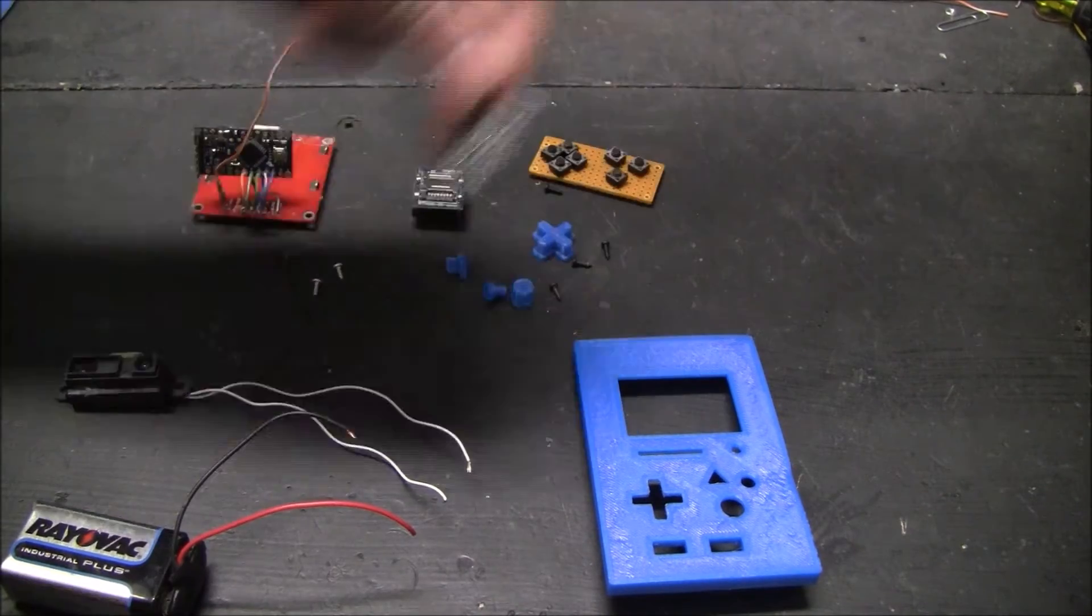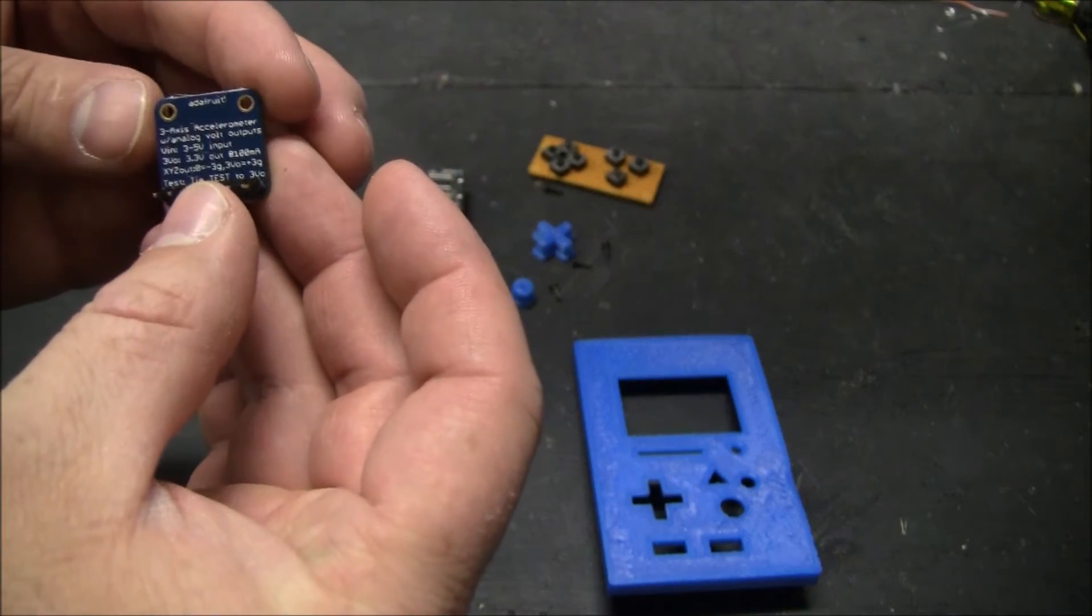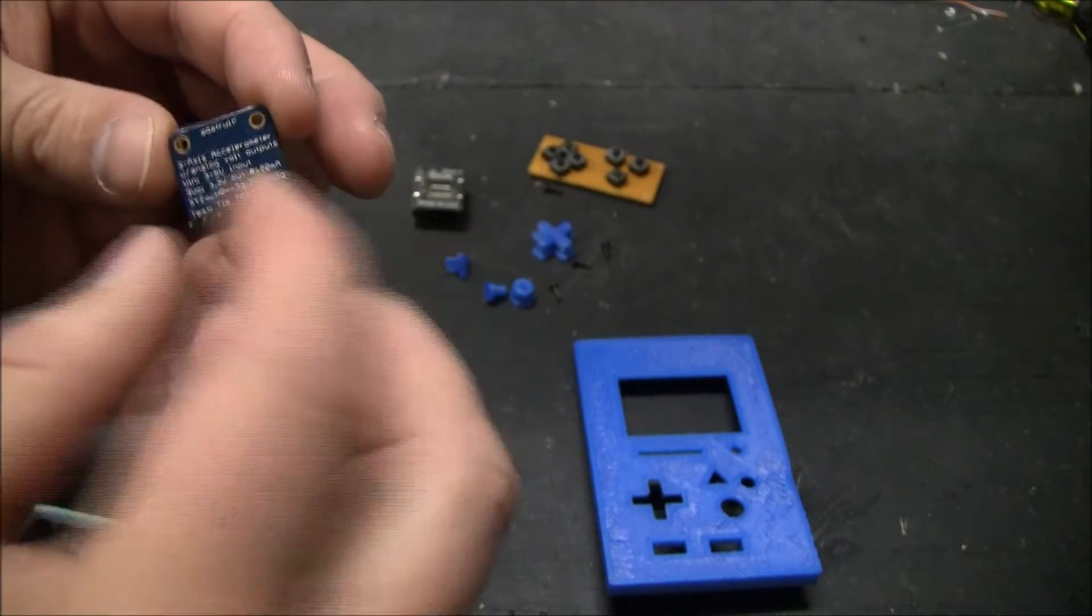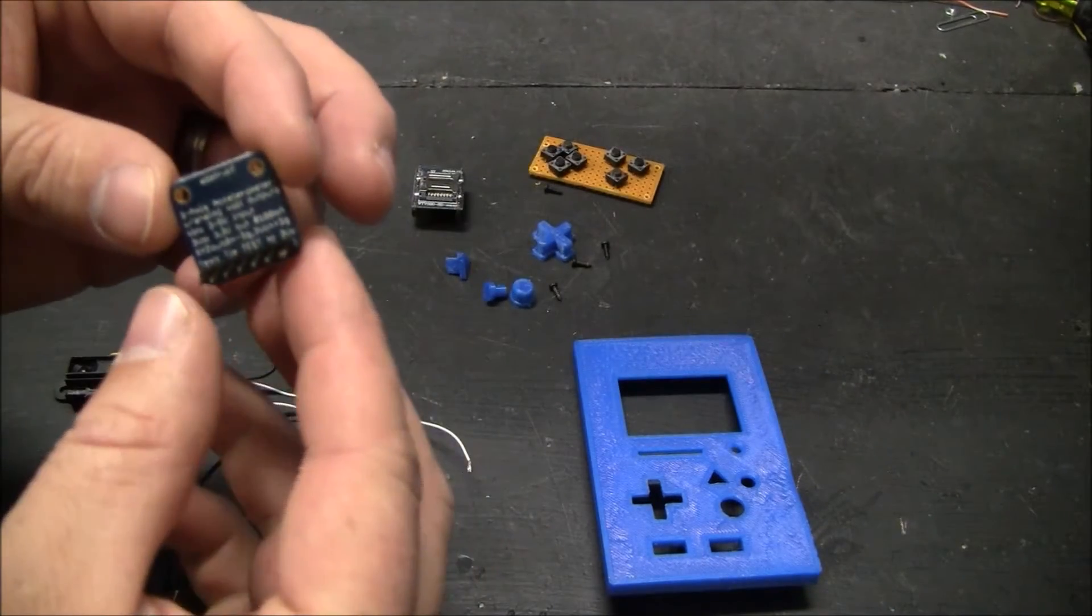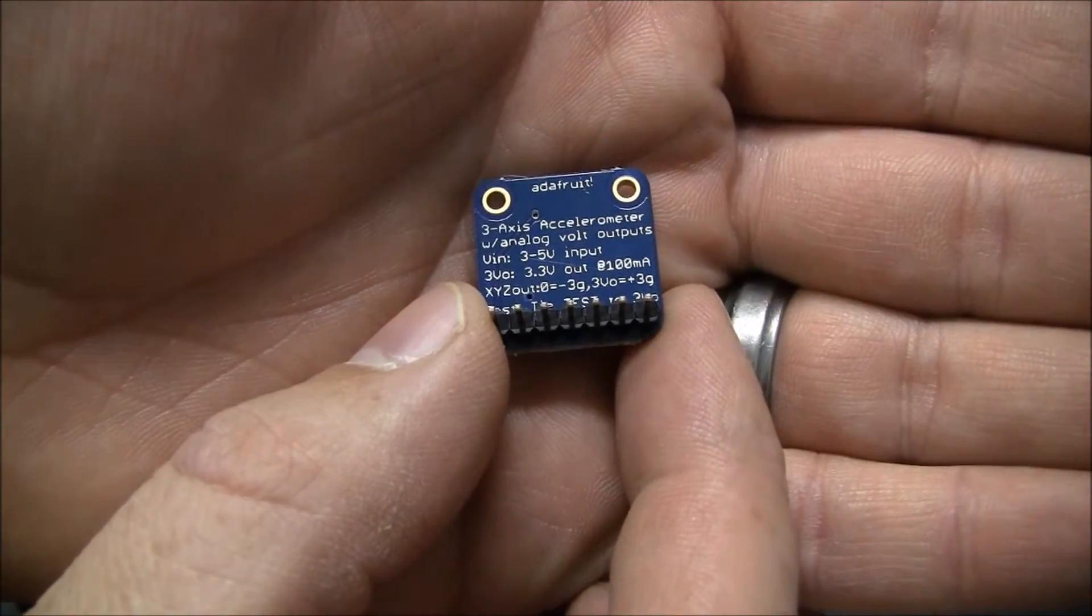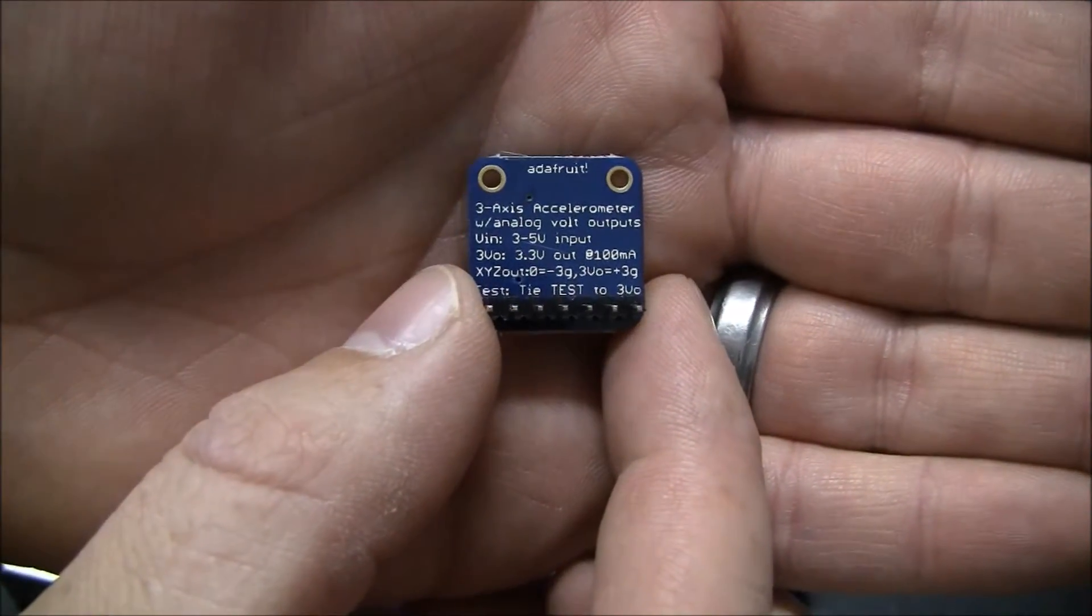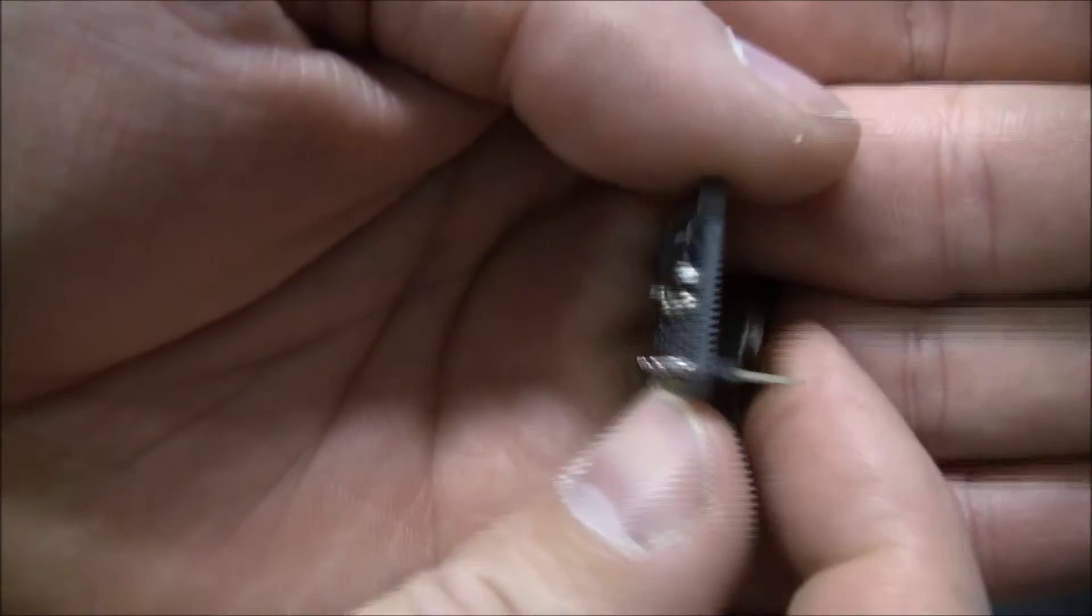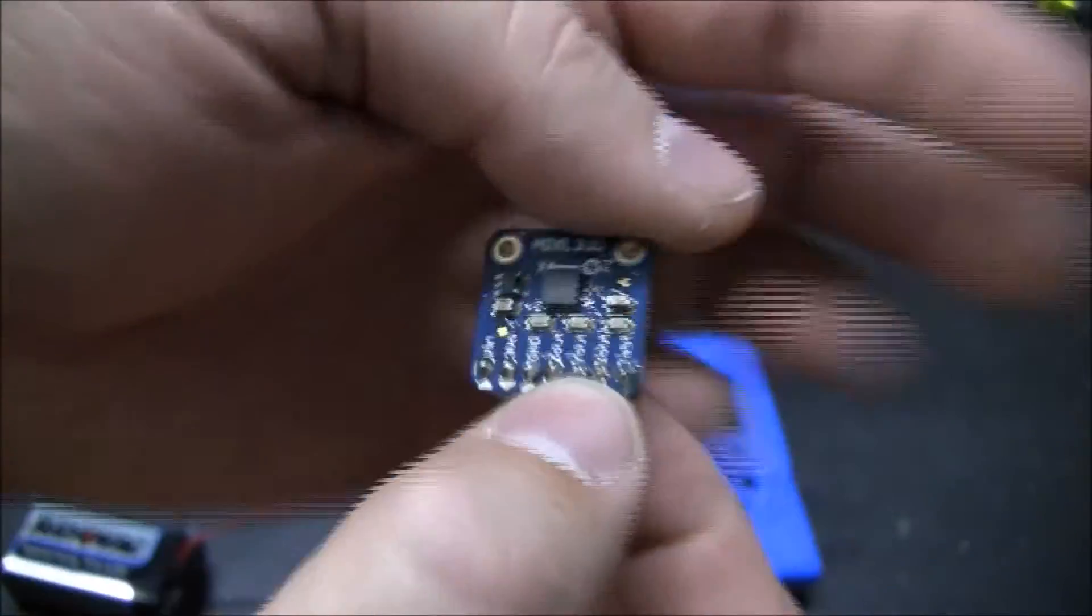This is a 3-axis accelerometer from Adafruit. So you've got 3 analog outputs here. 3-axis accelerometer with 3 analog outputs that I can bring in to the Arduino.